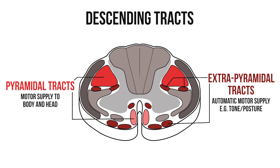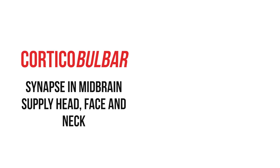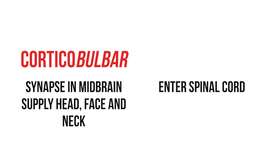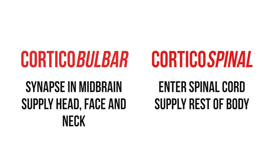I want to come back to the pyramidal tracts, because again we can sort them into two groups. Some of them synapse in the midbrain before heading to the head, face and neck — these are the corticobulbar tracts. The rest travel into the spinal cord to form the corticospinal tracts, and are responsible for controlling the muscles of the body.